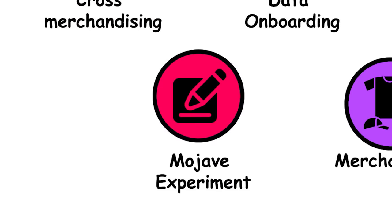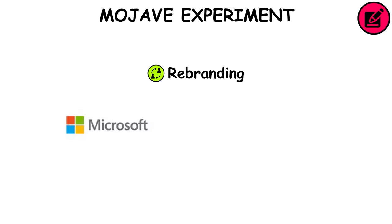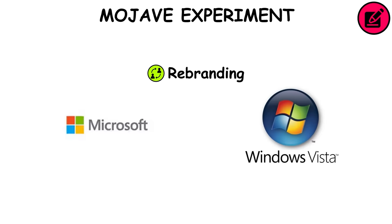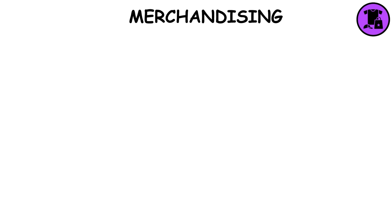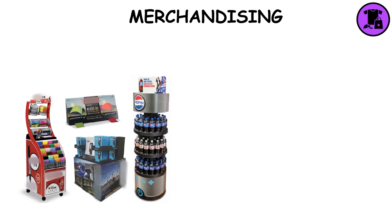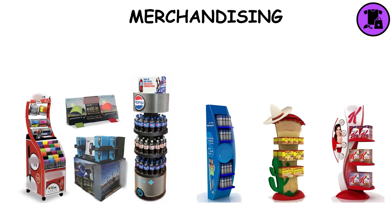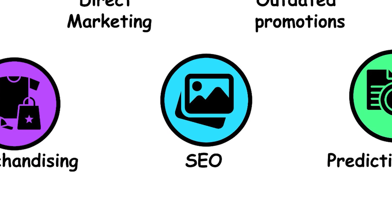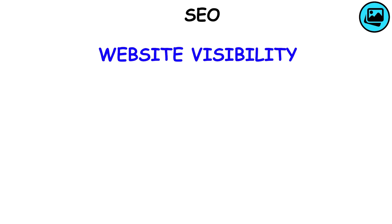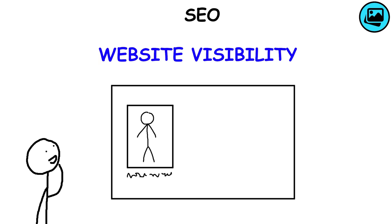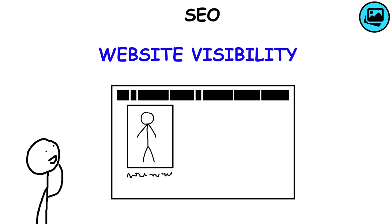Mojave Experiment: An example of rebranding — it refers to Microsoft's 2008 campaign to improve Windows Vista's image by demonstrating it under the disguise of a new Mojave version. Merchandising: Practices that enhance product sales in retail, involving creative product display to attract customers. SEO: Improving a website's visibility in search engine results to attract more visitors and customers — for example, by naming the pictures on the website or using long titles.